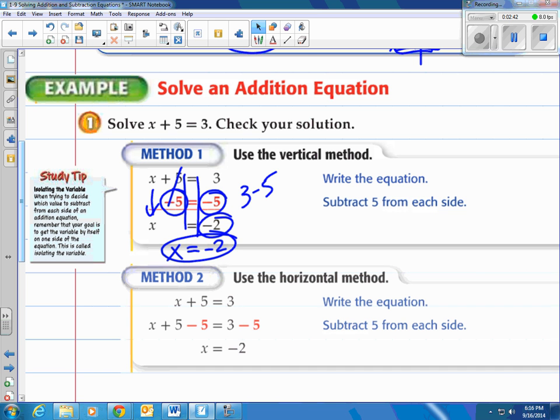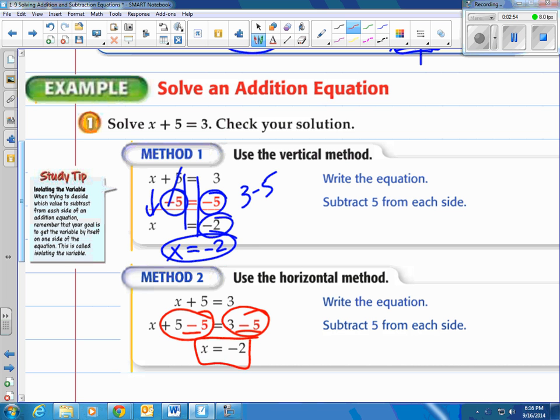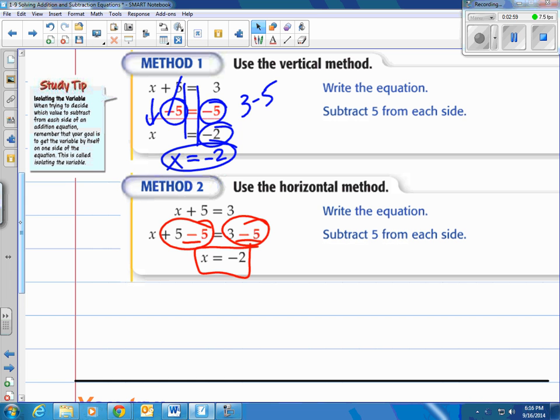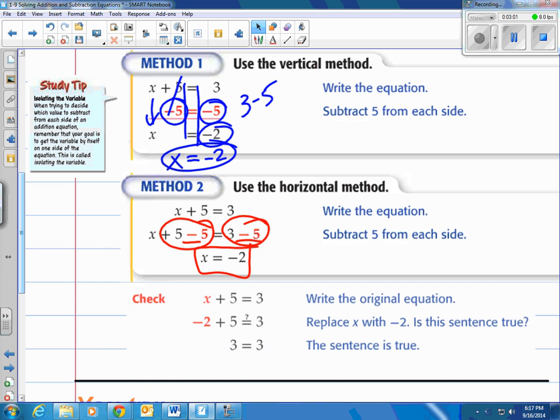The horizontal method is similar, except you notice that they put the subtraction of 5 in one line. They still have plus 5, minus 5. They still have 3, minus 5. And the solution is x is equal to negative 2. Keep in mind, though, we'd like to check our answers each time. So when you're done doing these, you can go back and plug your number that you think it is, negative 2 in this case, into the problem. Notice what they did. They took the x out, plugged in negative 2. Negative 2 plus 5 is equal to 3. Is that true? It sure is. So it checks out.